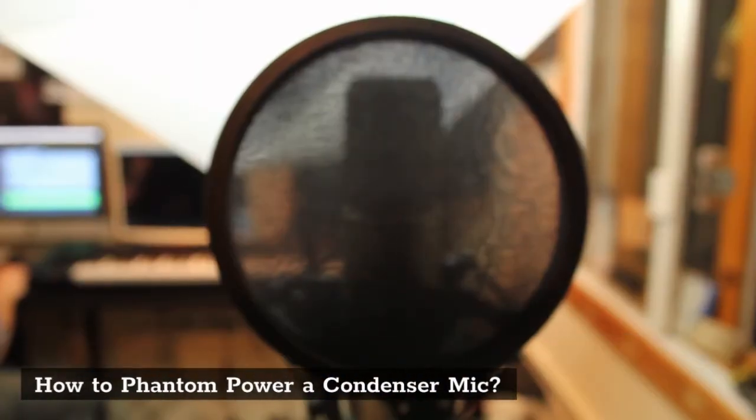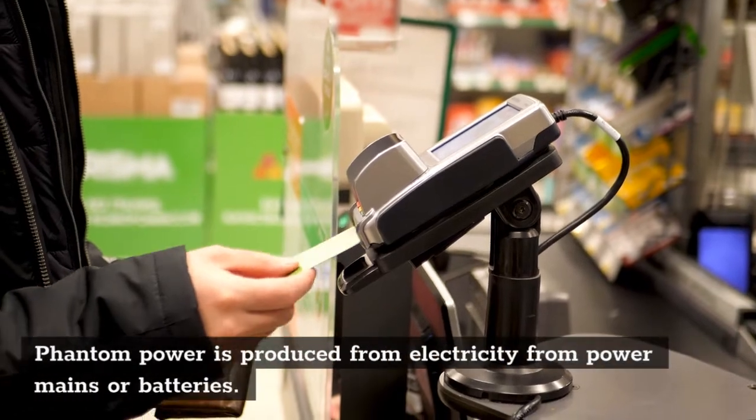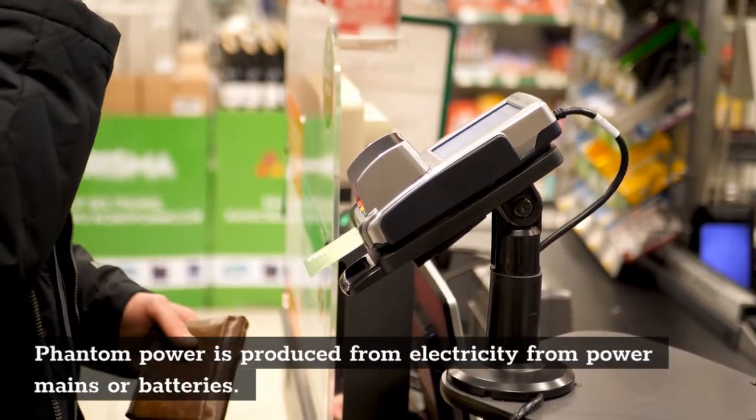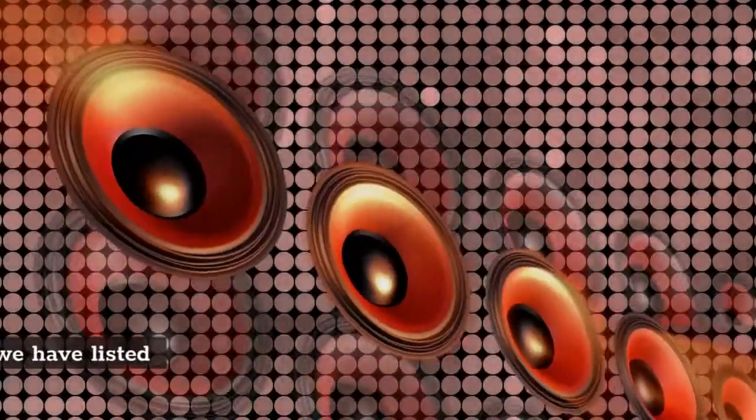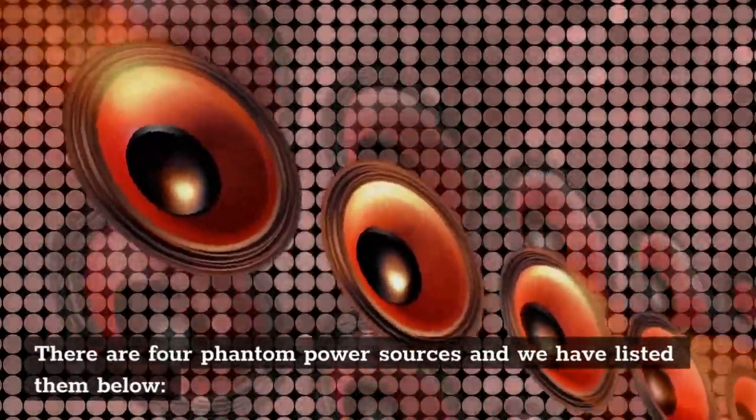How to phantom power a condenser mic? Phantom power is produced from electricity from power mains or batteries. There are four phantom power sources and we have listed them below.